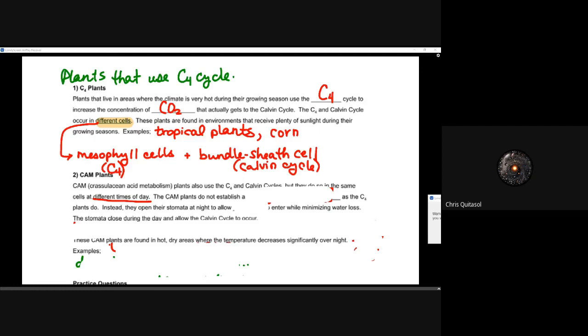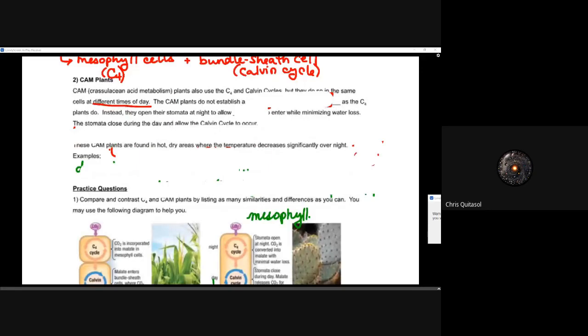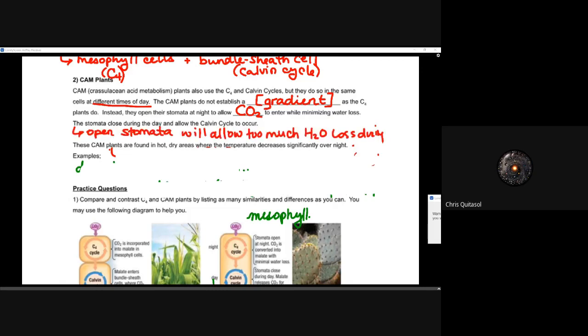CAM plants are the other type of alternate method with which plants fix carbon. CAM, or Crassulacean acid metabolism plants, also use that C4 and Calvin cycle as well. But they do so at different times of the day. They do it in the same cell, but at different times. CAM plants don't have to establish that gradient in terms of building up that malate in the mesophyll cells, then passing it on to the bundle sheath cell for the Calvin cycle. They don't have to do that, whereas C4 plants definitely do. Instead, they open their stomata at night to allow CO2 to enter, while minimizing water loss because the temperatures are in hotter places, the temperature lowers when the sun goes down. They take in all the CO2 that they can during the night, this minimizes water loss, and then the stomata stay closed during the day to allow the Calvin cycle to occur. As those open stomata will allow too much water loss during the day.